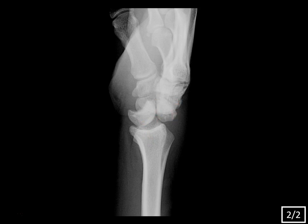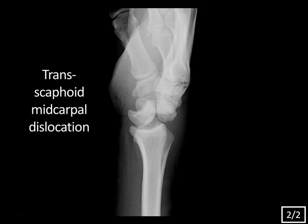You might initially think this is a perilunate dislocation, but look more closely at the lunate. Normally the lunate should point straight up and down in line with the radius, but here there's a volar tilt or volar angulation of the lunate, indicating the next stage — a midcarpal dislocation. Because we also have a scaphoid fracture, this is a transcaphoid midcarpal dislocation. In perilunate dislocation the capitate dislocates dorsally while the lunate still articulates with the radius. As the lunate tilts volarly, that's midcarpal dislocation. When the capitate moves proximally and completely displaces the lunate volarly, that becomes a lunate dislocation, where the lunate no longer articulates with the radius at all.